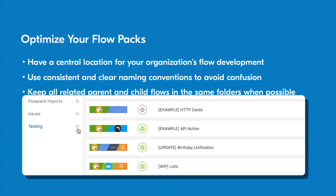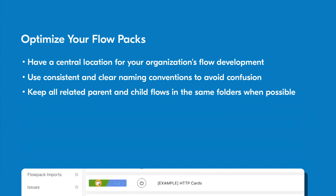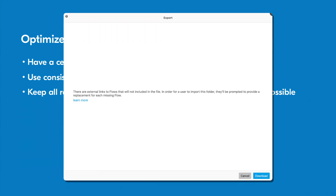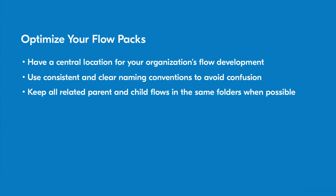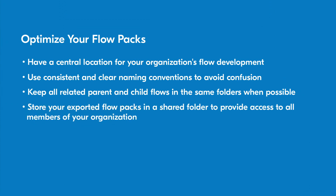In order to export a flow pack, click on the gear icon next to the folder name and select export. You will then see a message prompting you to download the flow pack. Finally, we recommend storing your imported flow packs in a shared folder so that all members of your organization have access to them by default.